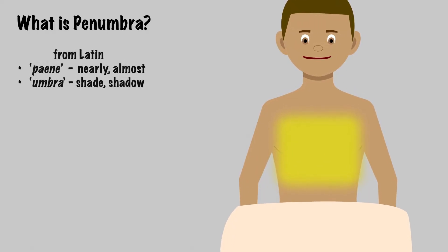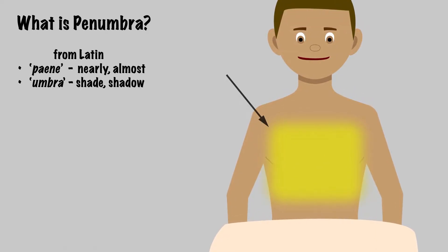Penumbra means almost shadow, in other words, the blurred edges of the photon field that are almost but not completely blocked. There are three types which combine to create the penumbra we see in our photon treatment fields.